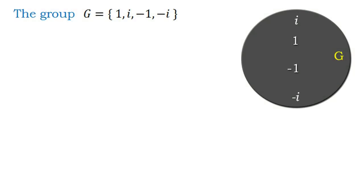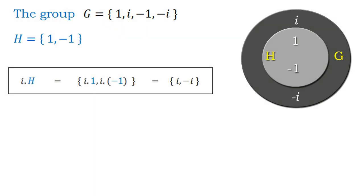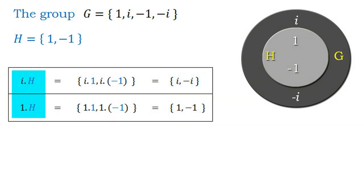Let's take an abelian group G under multiplication and a subgroup H of G. The idea is to take numbers from G and multiply them by H. Taking element i from G and multiplying it with H, we get this set. Taking 1 from G and multiplying it with H, we get this set. Observing these two sets, we find we have obtained all values of G, so we stop. These two sets are the left cosets of H in G.